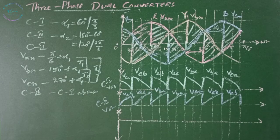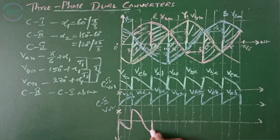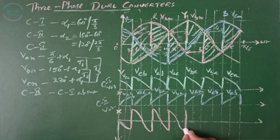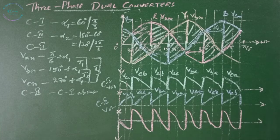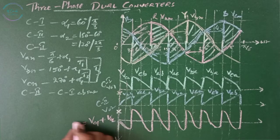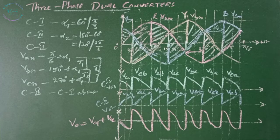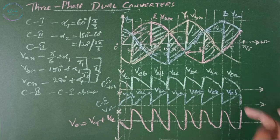The resultant V01 plus V02 is the exact output across the load. These are the waveforms when alpha 1 equals 60 degrees and alpha 2 equals 120 degrees, for converter 1, converter 2, and the resultant.